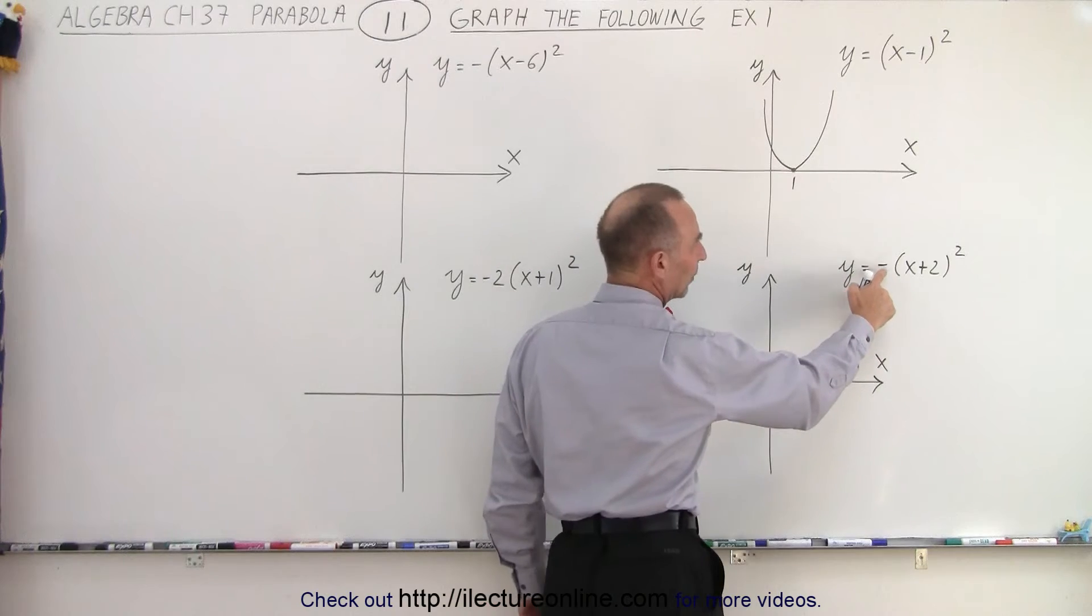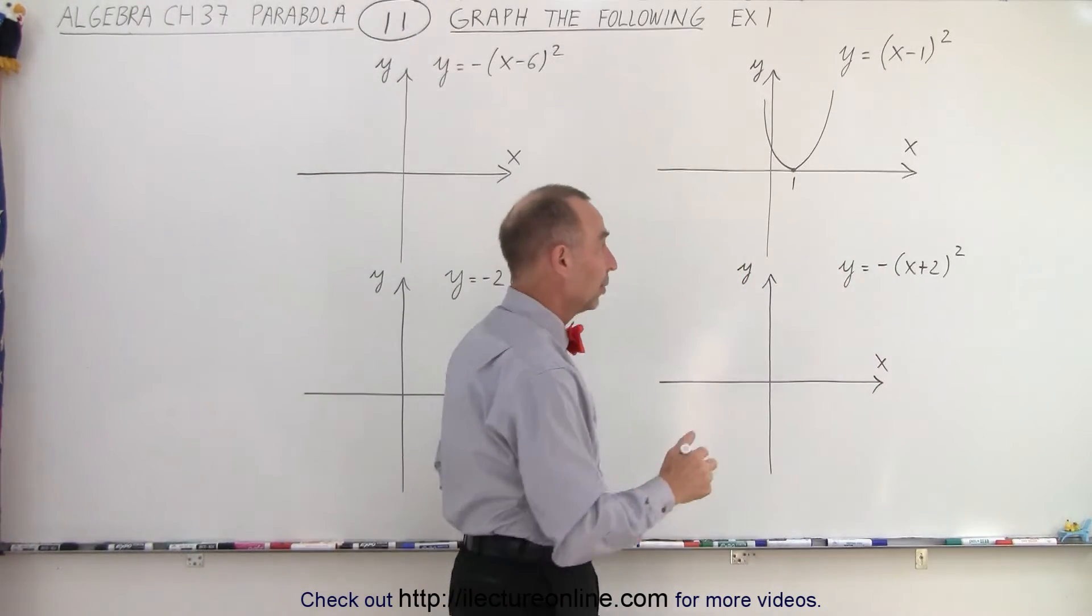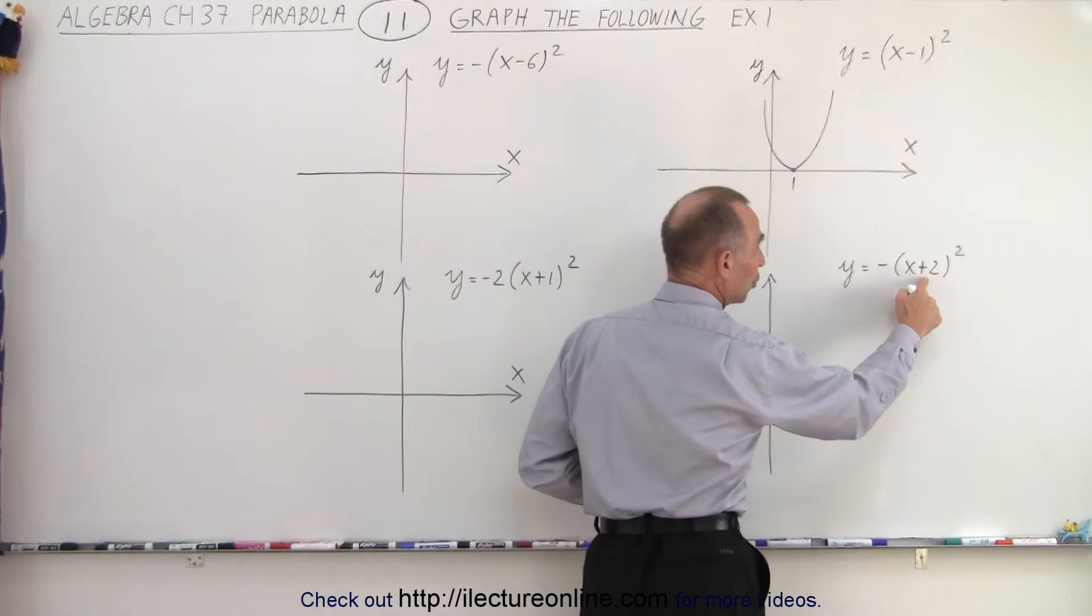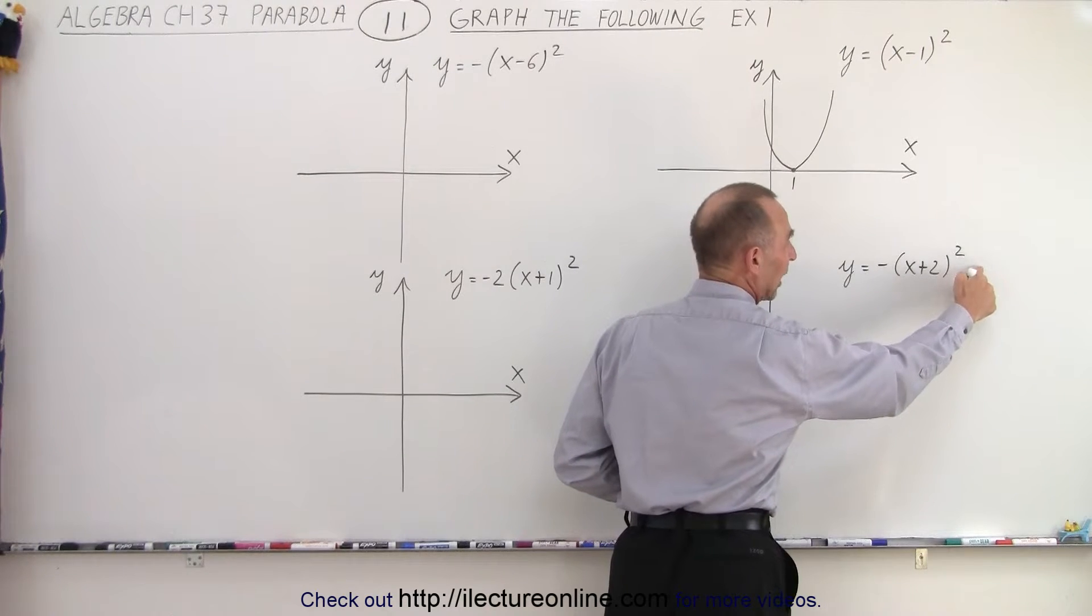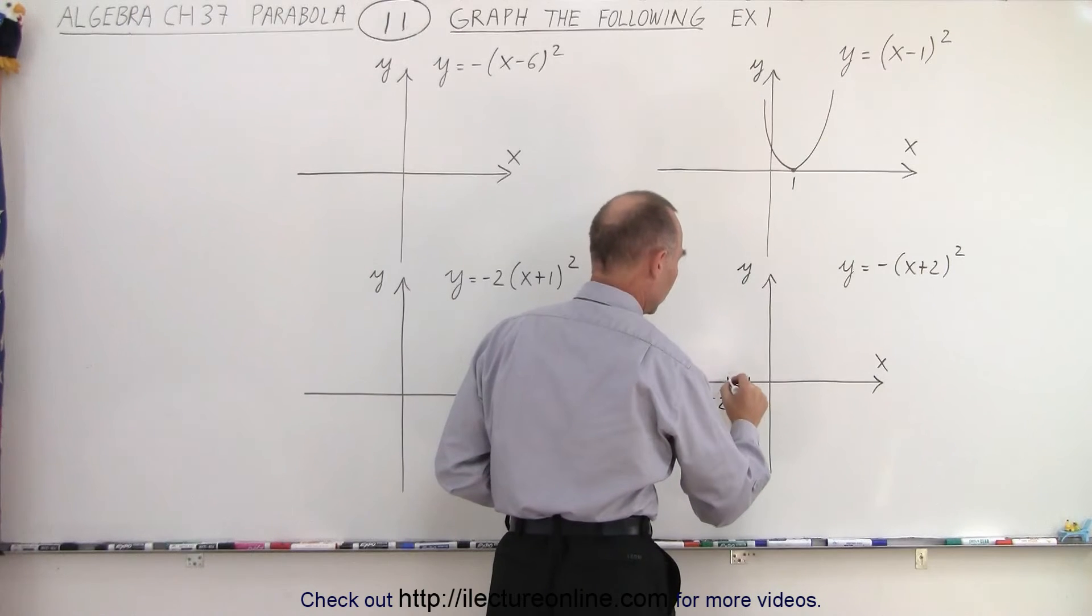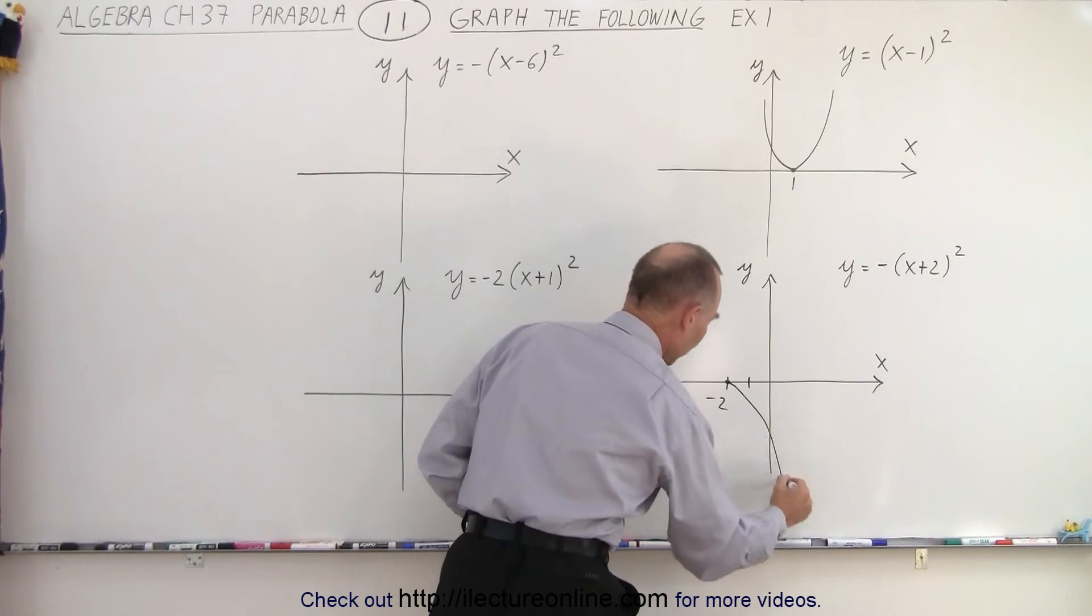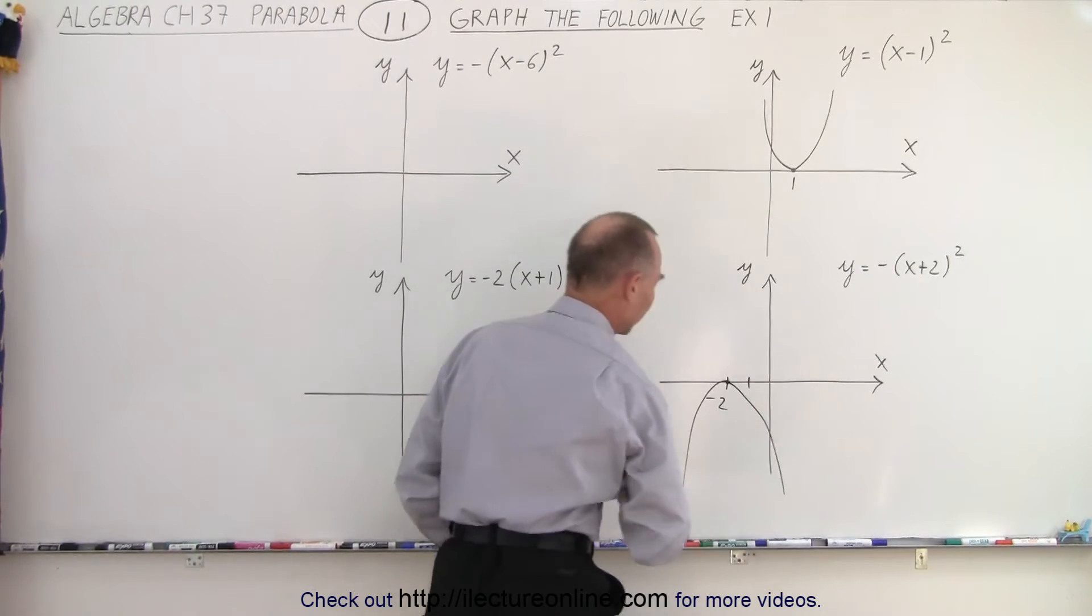Over here, notice we have a negative sign in front, which means the parabola opens downward. We have a shift to the left of 2, and we don't have a shift up or down because there's no constant. So 1, 2, that's minus 2. The vertex is right on the x-axis. It opens downward, so the parabola will look something like this.